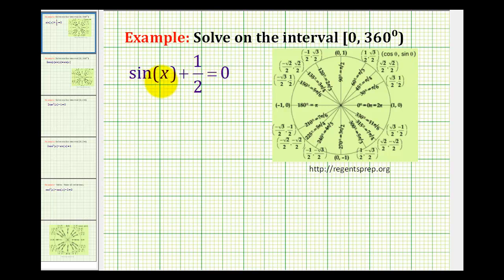In this example, we want to solve sine x plus 1/2 equals zero on the given interval. So we want to determine which angles on this interval satisfy this equation. Now, this equation is pretty straightforward. There's only one sine function and nothing is squared.